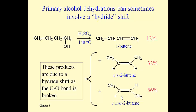We get more of the trans isomer instead of the cis because trans alkenes are more stable and form in higher amounts. Both of these are disubstituted, but trans is better than cis. And we get very little of what we would ordinarily expect as the product if it were not for these kinds of rearrangements.